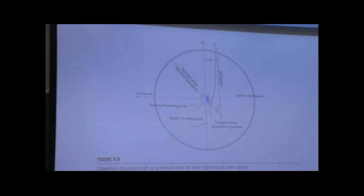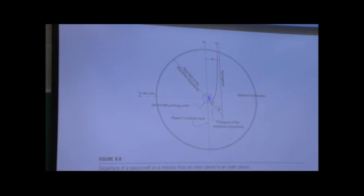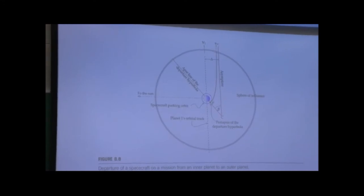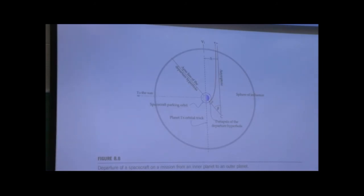Which means you're not moving anymore with respect to the planet — you're flying exactly like the planet around the Sun. These are all approximations of the patched conics method where you look at one planet and the Sun completely separately. If you go on a parabolic path, you will start flying around the Sun like the planet, and you never actually leave its sphere of influence — at least in this approximation.